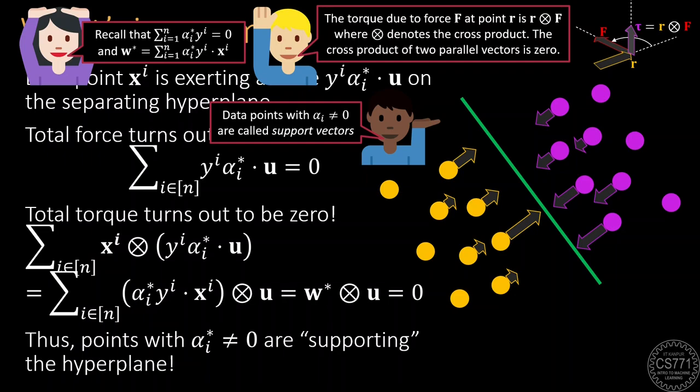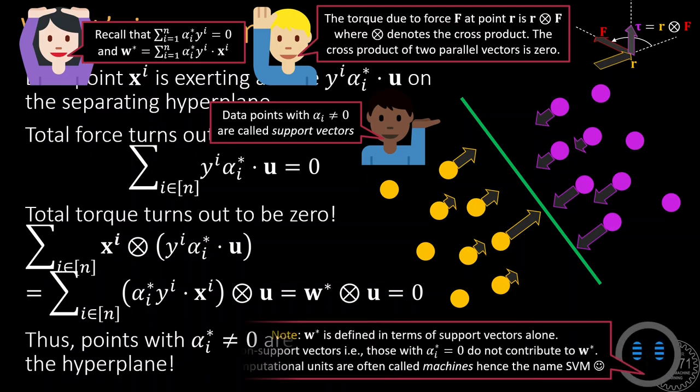Notice that w* equals summation alpha*_i times y_i times x_i which means that the data points with alpha*_i not equal to zero, that is the support vectors, are sufficient to construct w*. The gurus of machine learning gave this model the name support vector machine because it does computations using a model that relies on support vectors that can be thought of as supporting the decision boundary hyperplane of the model. Now, we know the reason behind the name SVM.